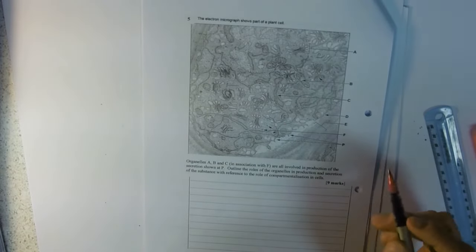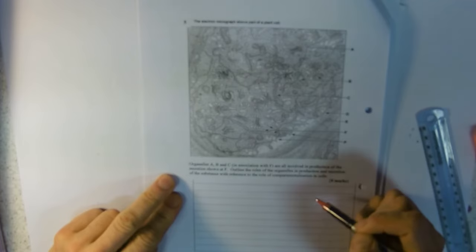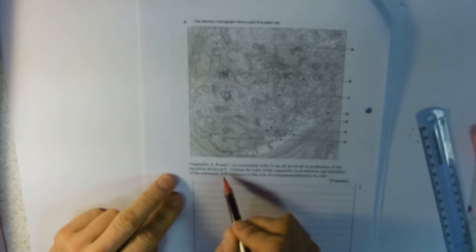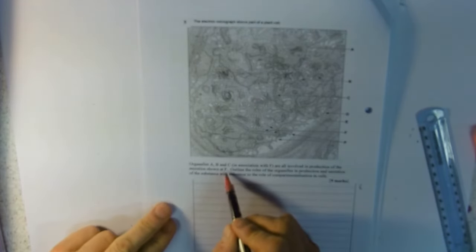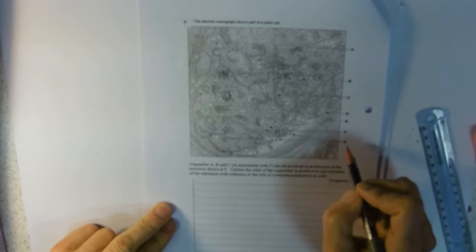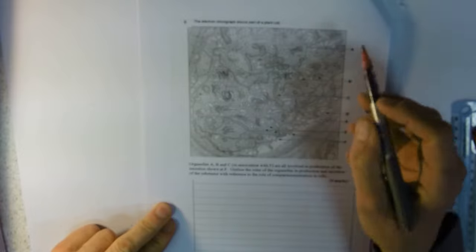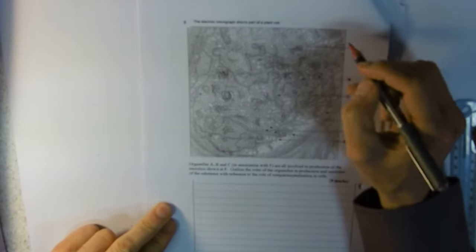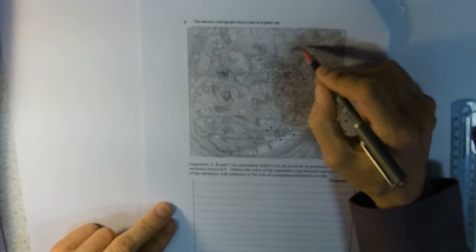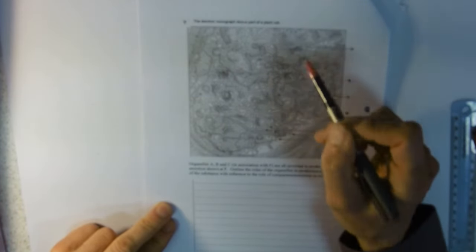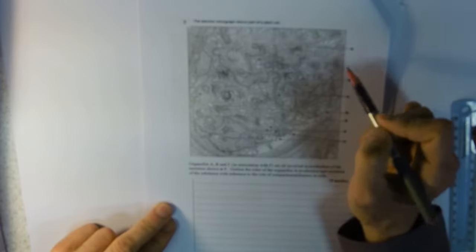Then you have a lovely essay, a nice picture there. Organelles A, B, and C and F are involved in the production of the secretion shown at P. There we are. P's a bit of a clue as to what might be produced as well. So we could do with identifying these. A kind of funny curved shape, stack of things there at A.